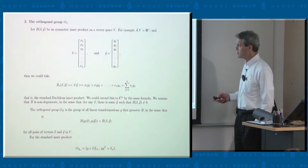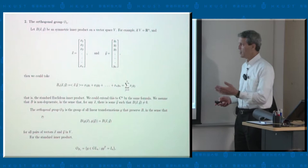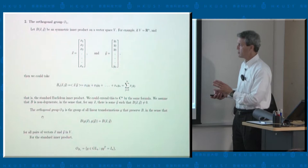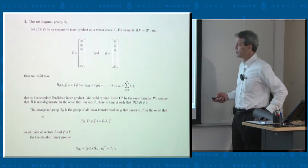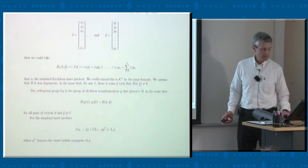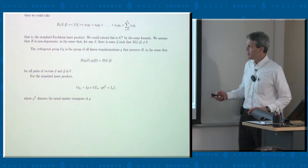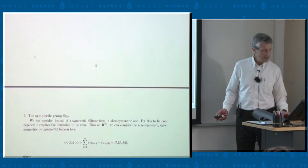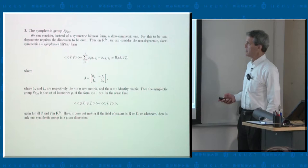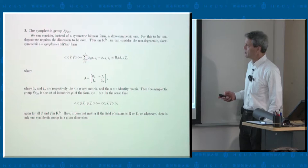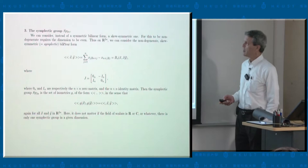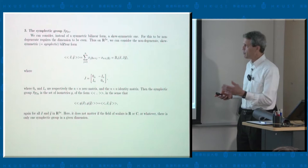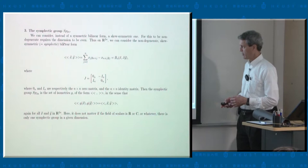The second classical group is the orthogonal group. You choose a symmetric matrix to define an inner product — the standard Euclidean inner product, working over the complex numbers. The orthogonal group consists of all linear transformations that preserve the value of the form. It's defined by an invariance condition, and the inner product is itself an invariant for the action of the orthogonal group. An explicit set of equations is g·g^T = I. The symplectic group uses a skew-symmetric bilinear pairing instead — its matrix satisfies J^T = −J — and the symplectic group Sp_{2n} is the group of things that preserve this pairing.